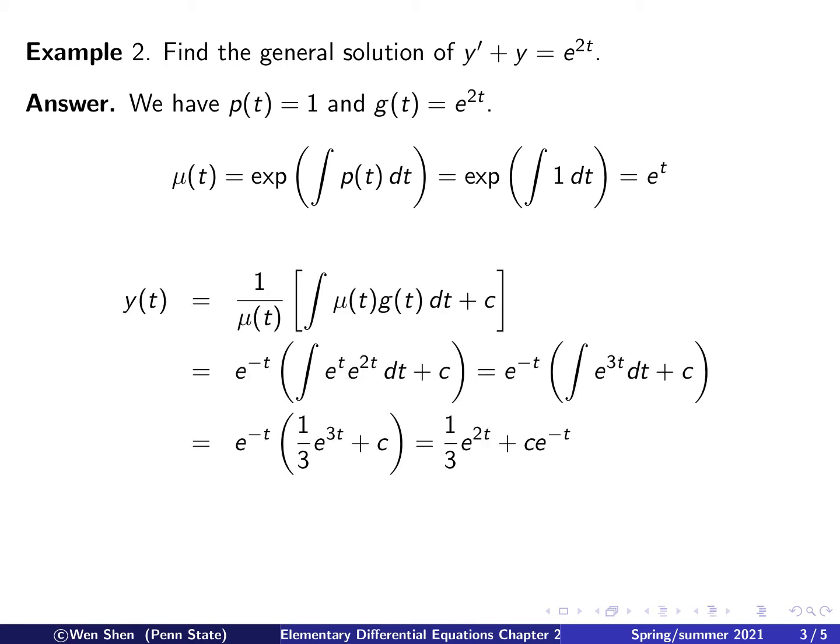Then we can form the solution using this formula. I repeat it, so we look at it enough times that we will manage to memorize it and make our life easier. So plug it in, e to the negative t, and I have to integrate e to the t, g(t) is e to the 2t plus a constant.